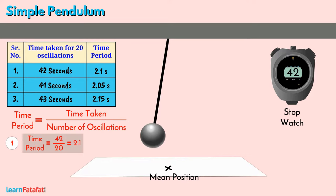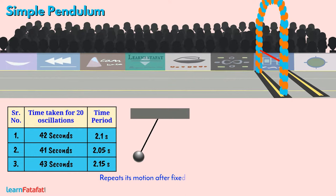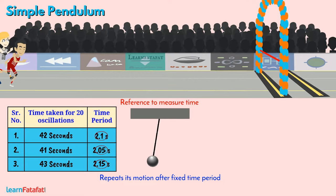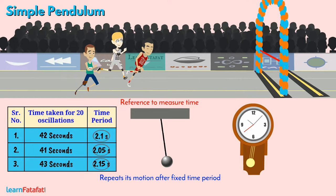A simple pendulum repeats its motion after a fixed time period. We can take it as a reference to measure time. In fact, we can use any periodic motion to measure time. The clock that we use to measure time is also based on periodic motion of its hands.